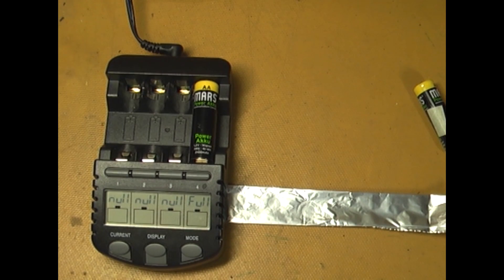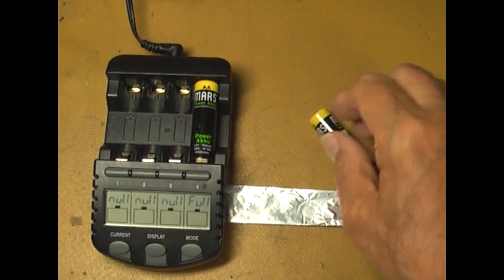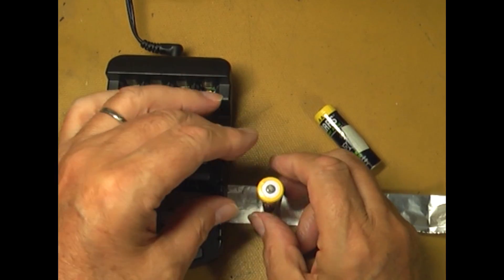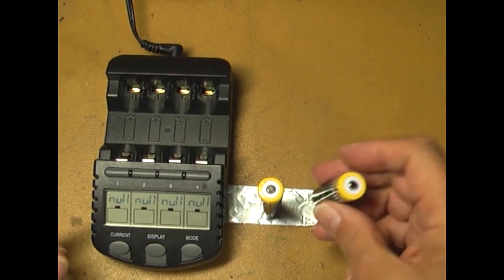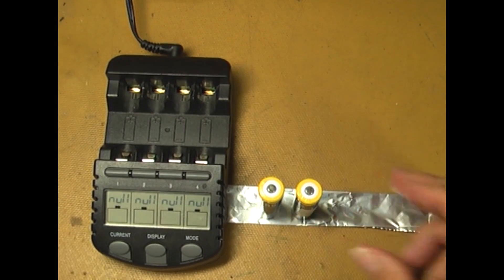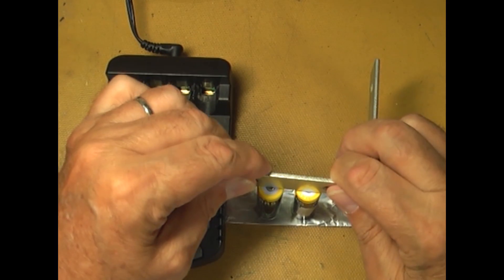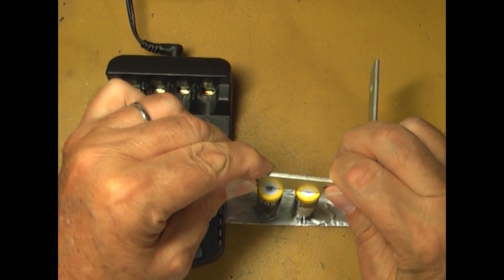Once the good one is fully charged, I place both on the aluminum strip, both plus poles upwards. With a piece of metal, I make a connection between the plus poles for 5 to 10 seconds. Do not exceed.